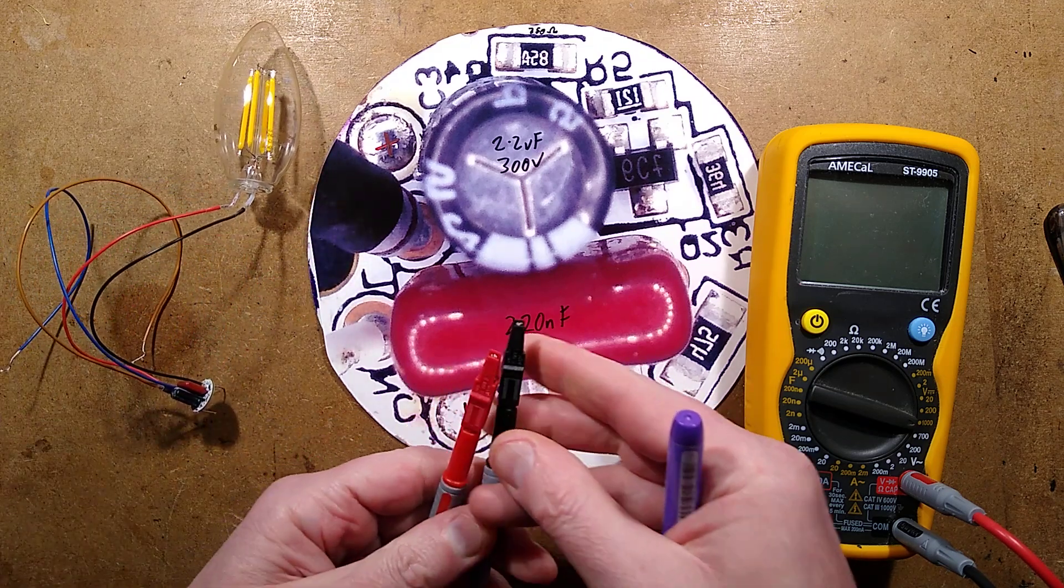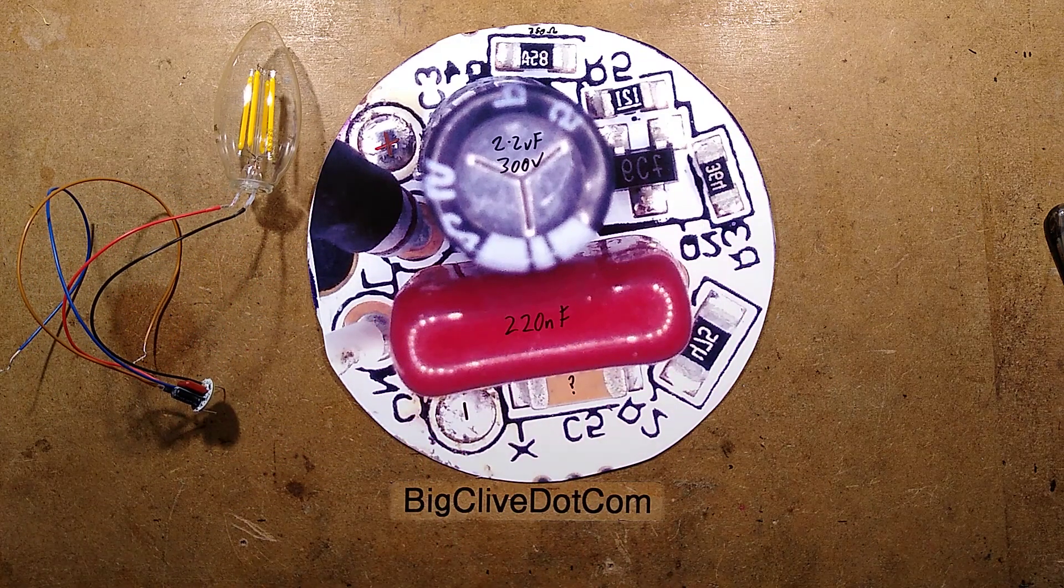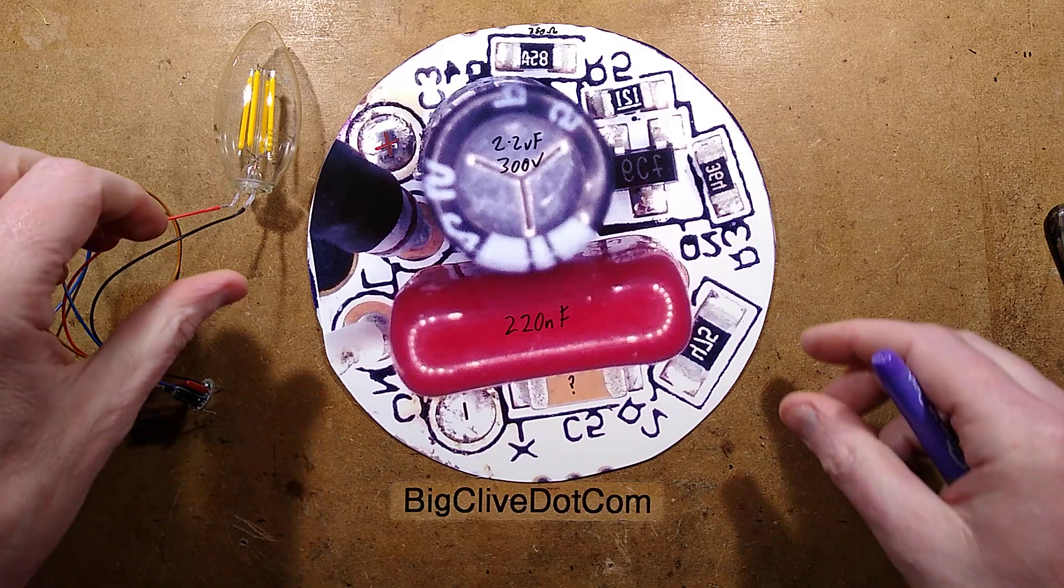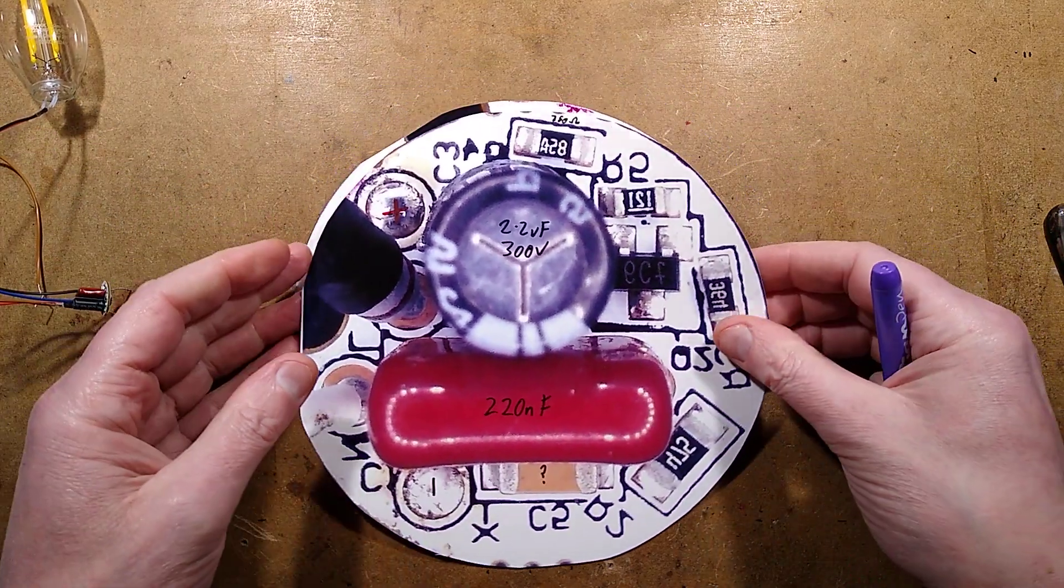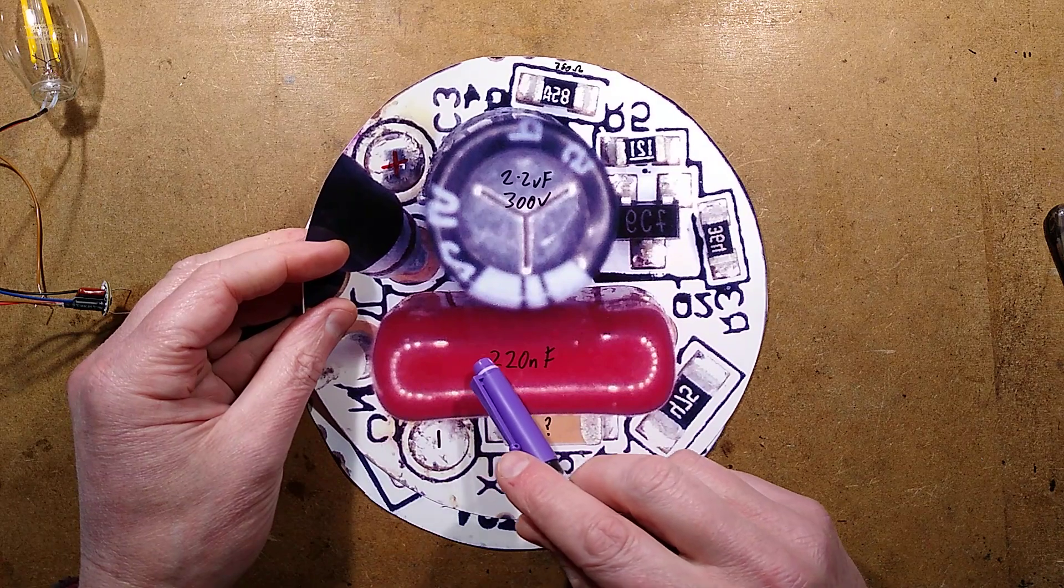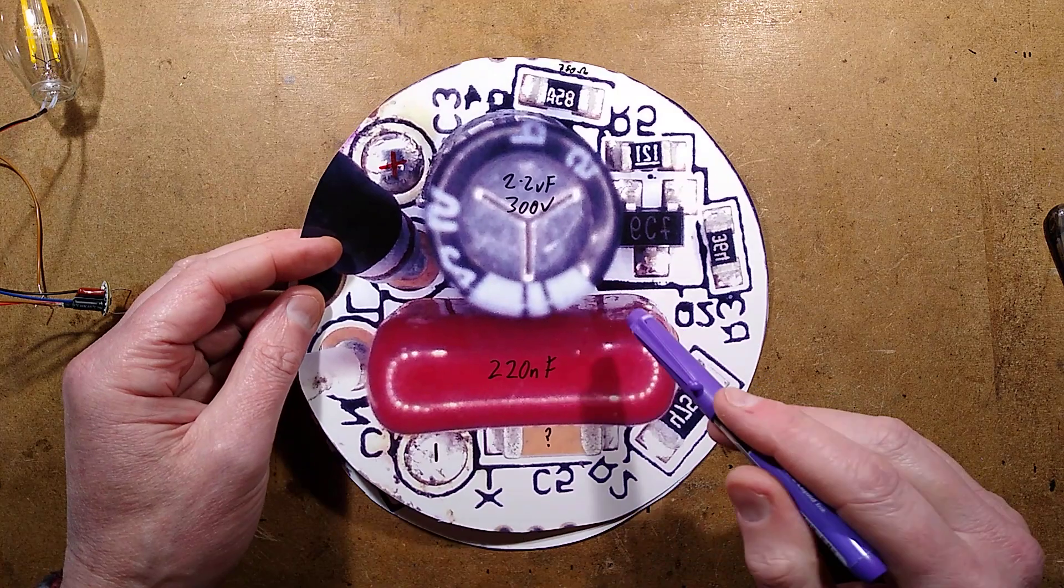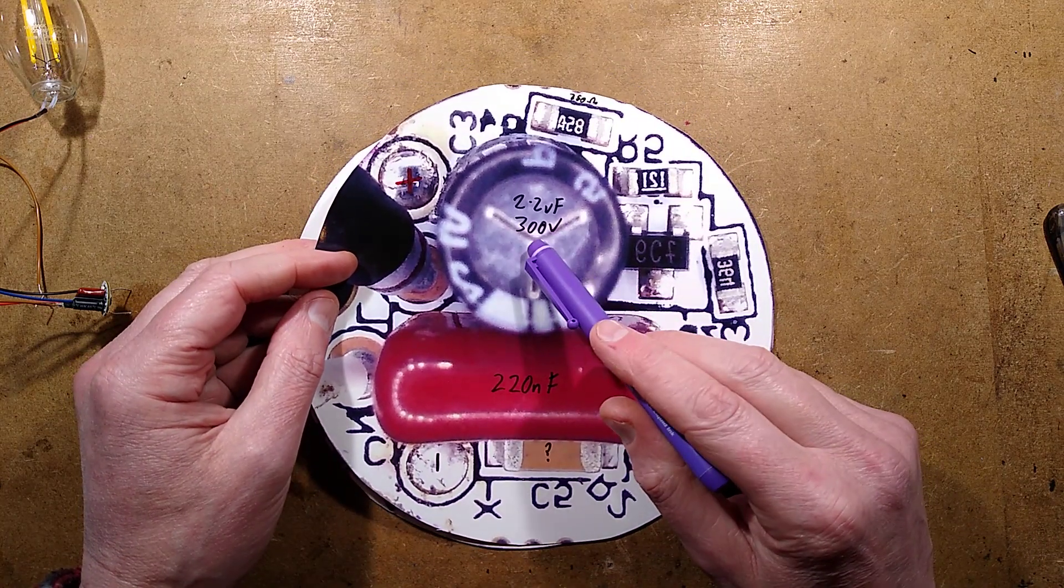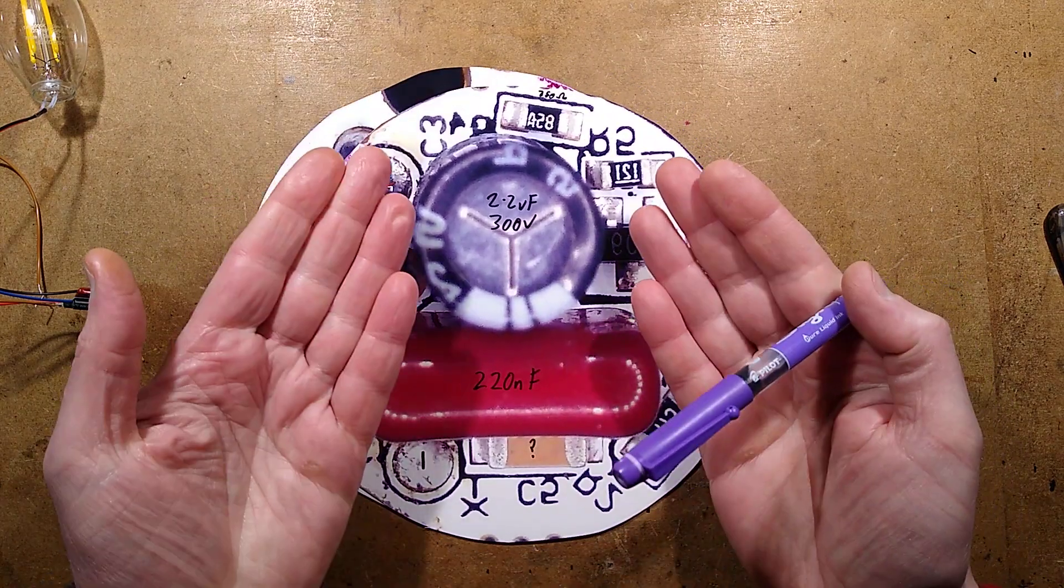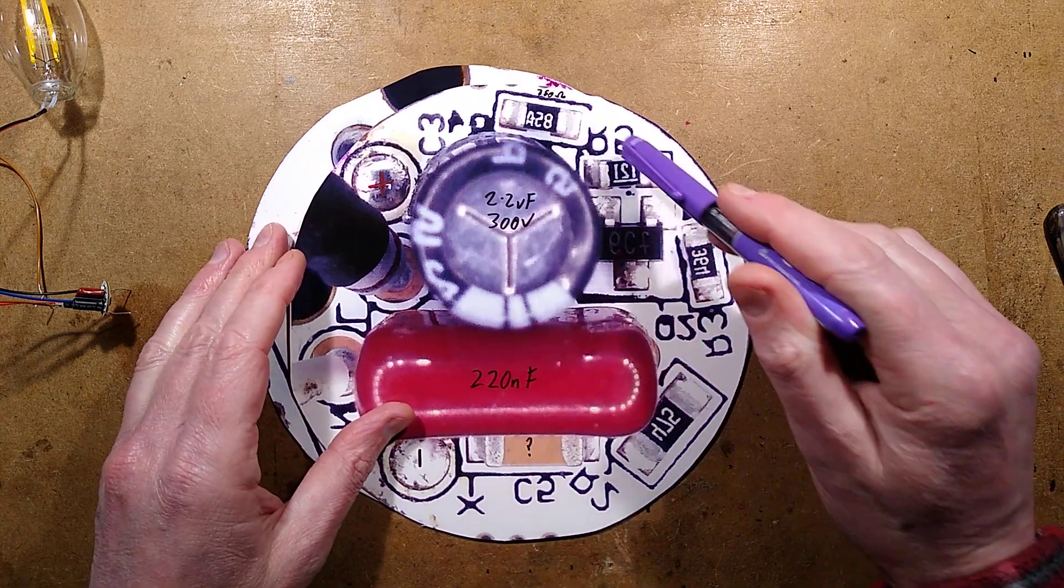Let's take a look at the circuit board. The circuit board has a standard metal film 220 nanofarad capacitor. It also has a 2.2 microfarad 300-volt capacitor—they're out of focus because they're sticking up off the circuit board. I was more interested in what's on the board.